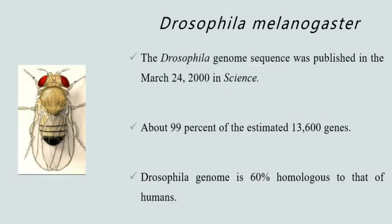The genome sequence of Drosophila was published on March 24, 2000 in Science, and the estimated number of genes in Drosophila melanogaster is 13,600. Out of these estimated genes, 99% of the genome has been successfully sequenced, and the Drosophila genome is 60% homologous to that of humans.